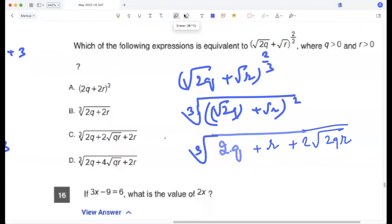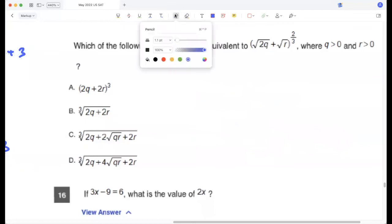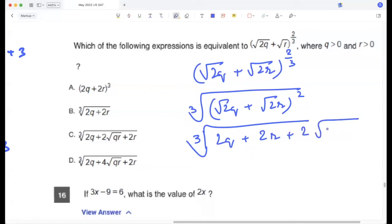So this question is supposed to have √2r. So let me just change that. Yeah, so it's supposed to be this. It's supposed to be (√2q + √2r)^(2/3). Right. So that would be third root of (√2q + √2r) squared, which is third root of 2q plus 2r plus 2 times 4qr, which is third root of 2q plus 2r plus 4 times √qr. Option D.